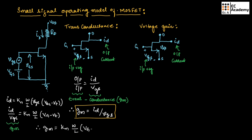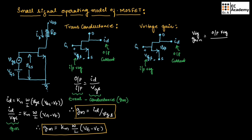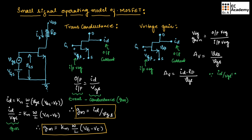Now let us understand voltage gain. Voltage gain is output voltage divided by input voltage. From this circuit, vgs is the input voltage and VDS is the output voltage. Therefore, voltage gain AV = VDS/vgs. We can write VDS = iD · RD, so AV = (iD · RD)/vgs. Since iD/vgs = GM, we can write gain AV = GM · RD. This is the expression for voltage gain.